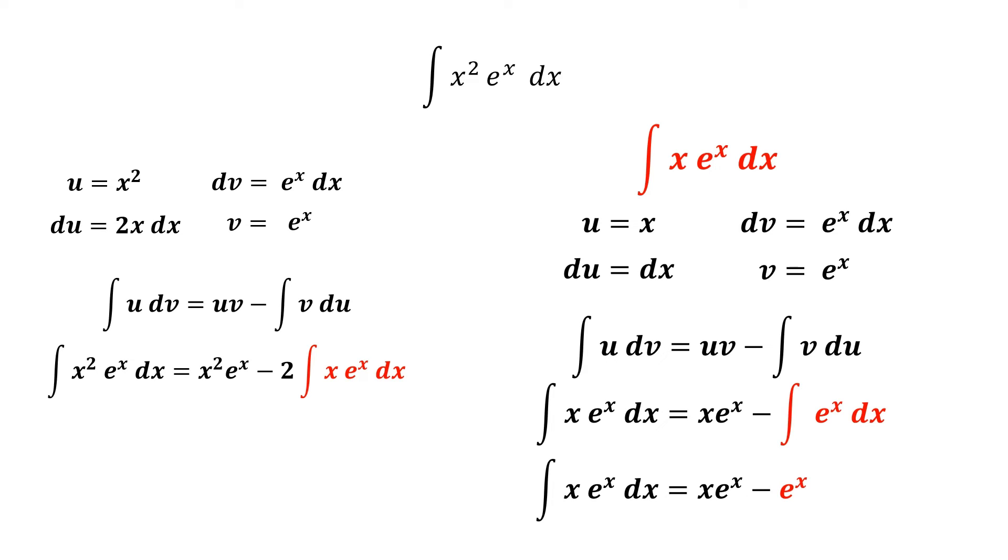The integral of e to the x is still e to the x. Therefore, we have x e to the x minus e to the x, and we have found the answer for the integral.